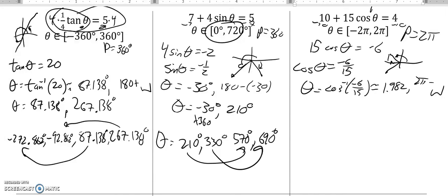Which would be 2 pi minus that. Whatever that is. 2 pi minus that answer. Sorry, I had a little calculator problem. 1.982. 4.301. So I have 1.982. I have 4.301.